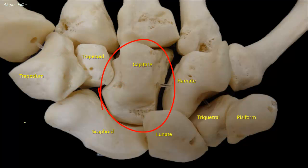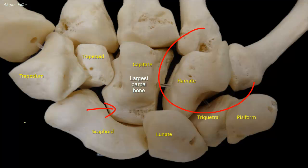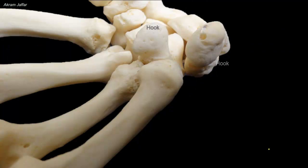The capitate — caput means head — has a rounded extremity, a big head, and is the largest bone of the carpus. The hamate — hamulus meaning a little hook — is named so because it has a distinctive hook. The hook of the hamate extends anteriorly.